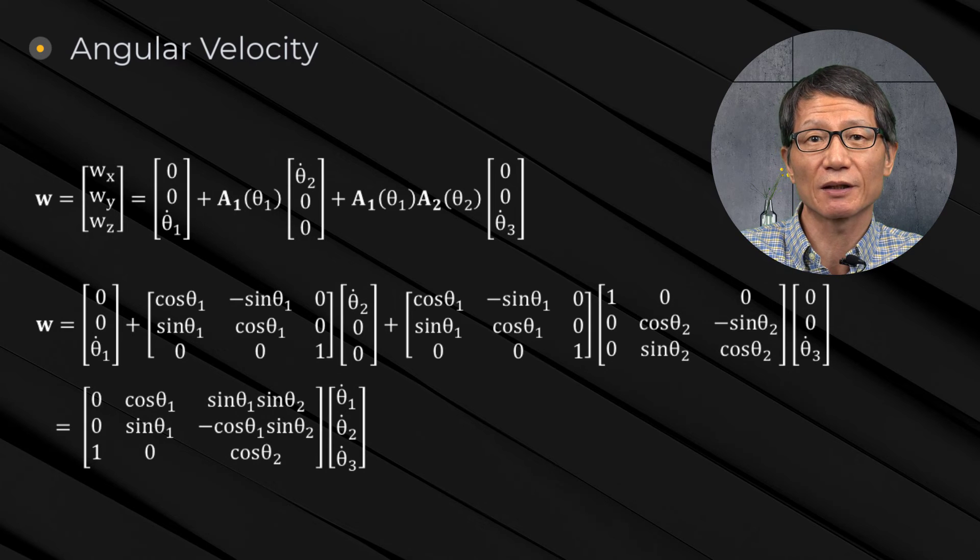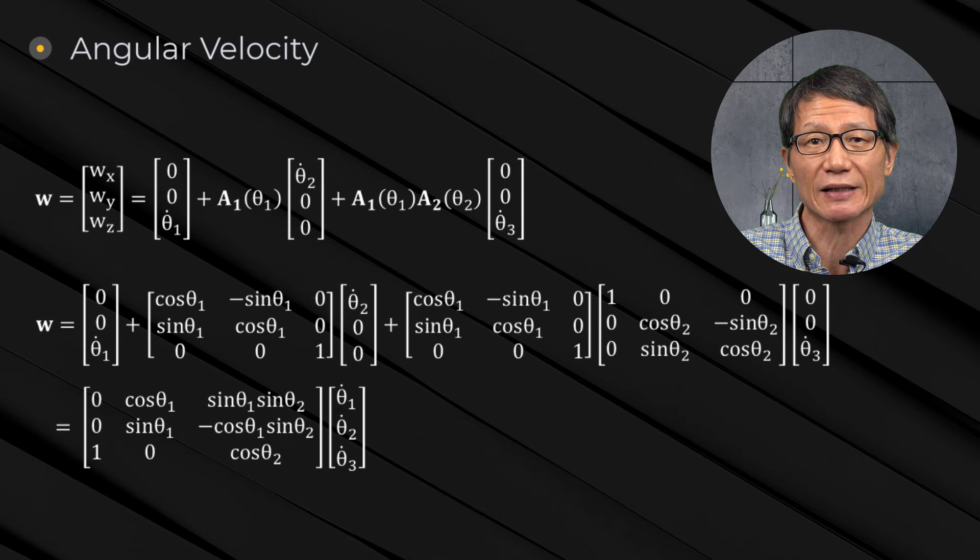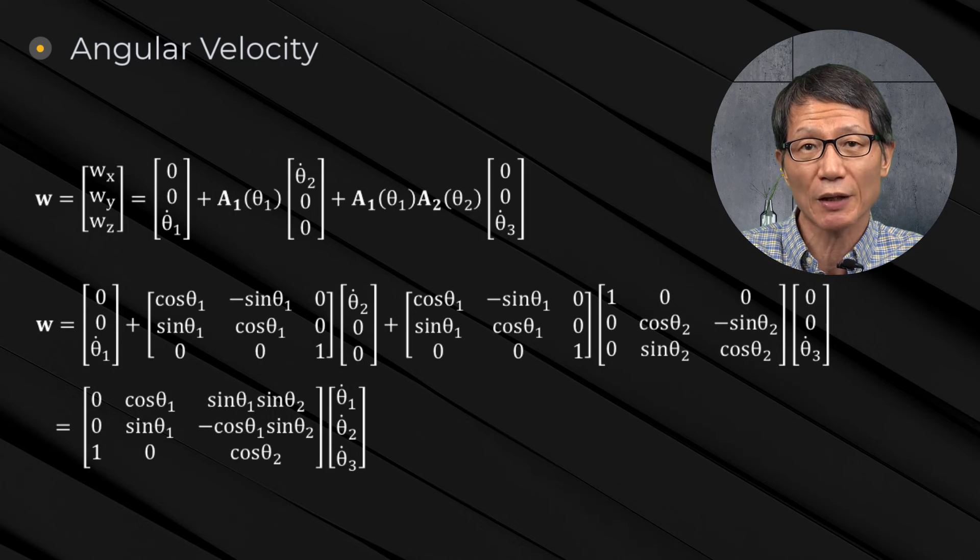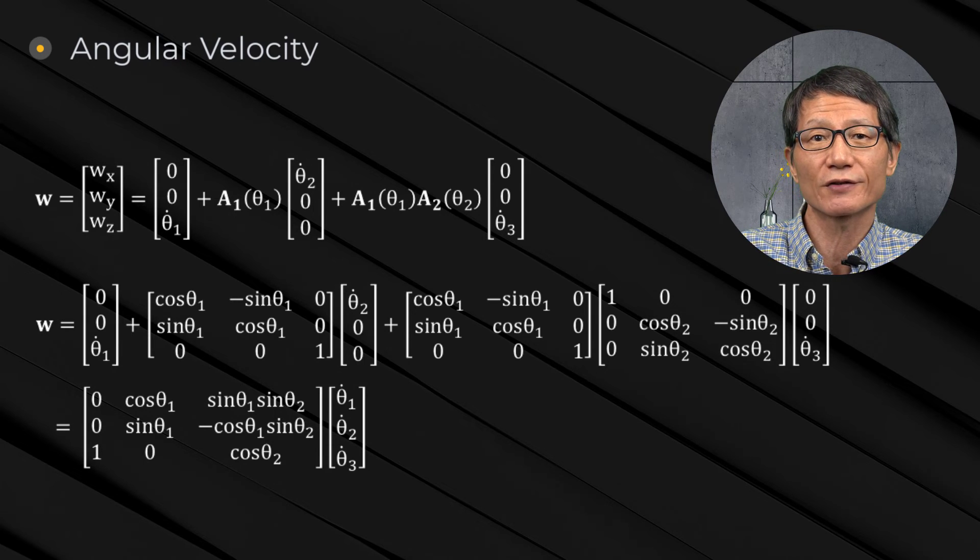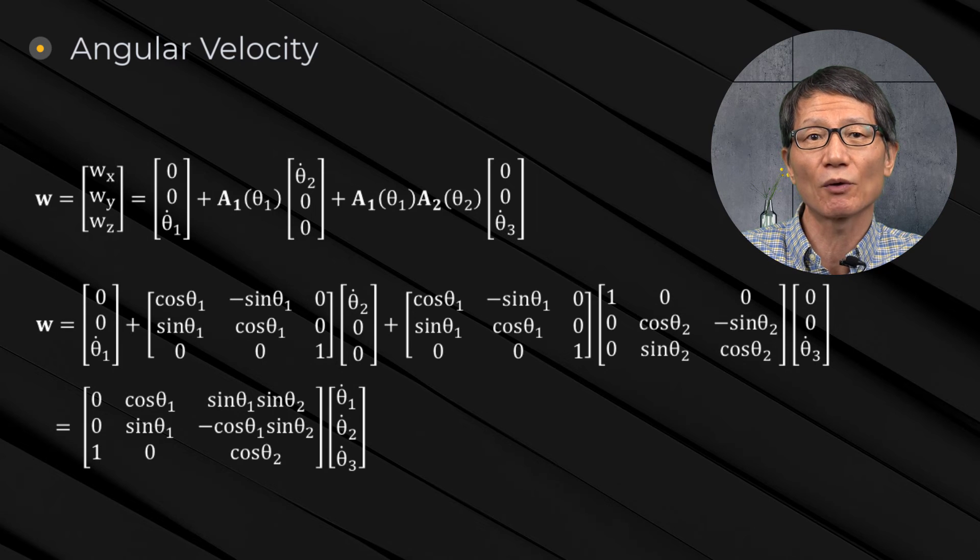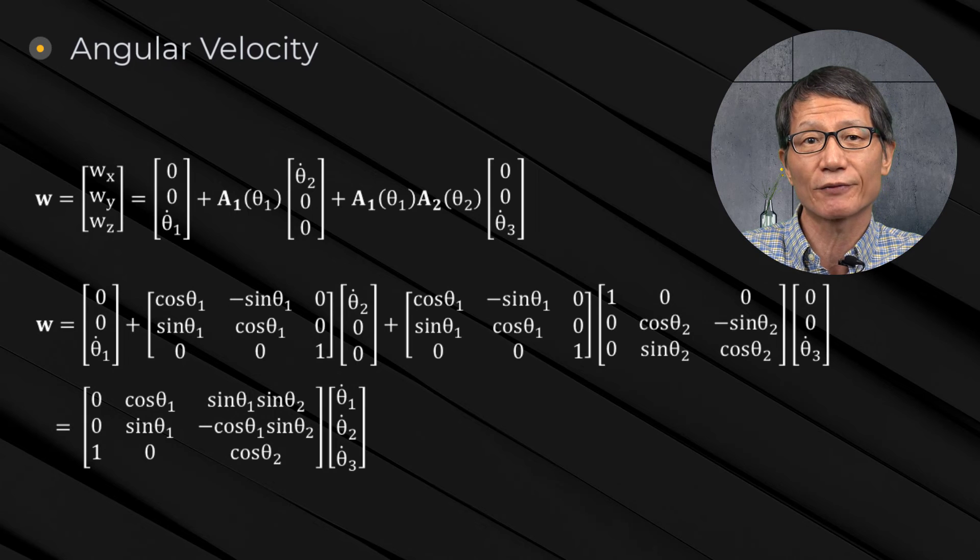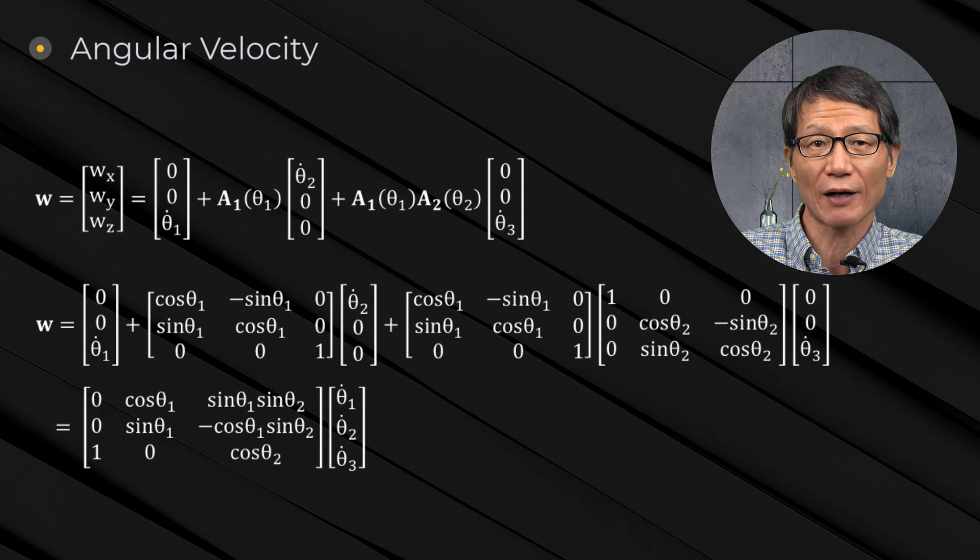Since the time derivative of the third Euler angle is in the x', y', z' frame, it must be transformed by the first and second Euler angles. By adding up all the contributions, the angular velocity of a body in the global frame is obtained as follows.